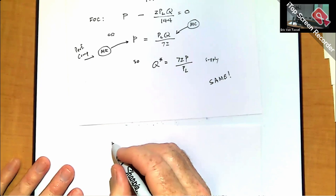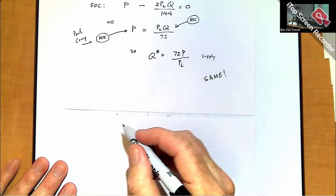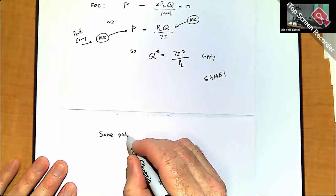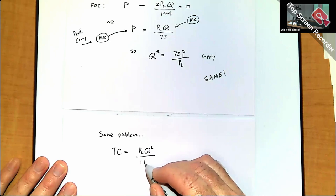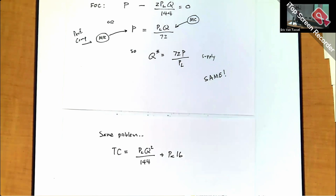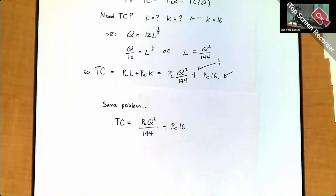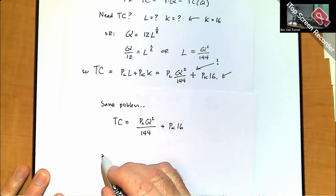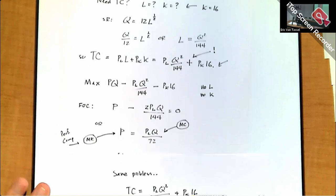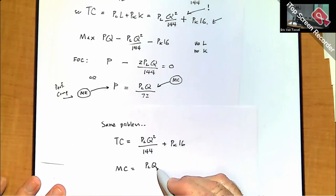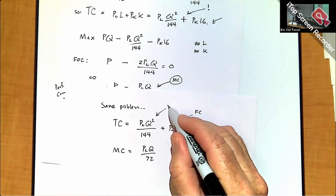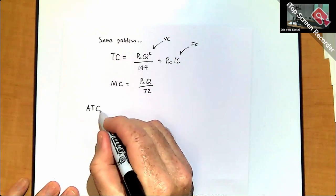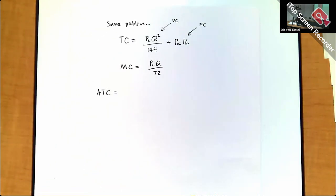From the total cost function TC equals PL times Q squared over 144 plus PK times 16, we can find marginal cost by taking the derivative with respect to Q: MC equals PL times Q over 72. We can also look at average total cost. ATC equals TC divided by Q, which gives ATC equals PL times Q over 144 plus PK times 16 over Q. This is used in principles class to show where the firm maximizes profit.